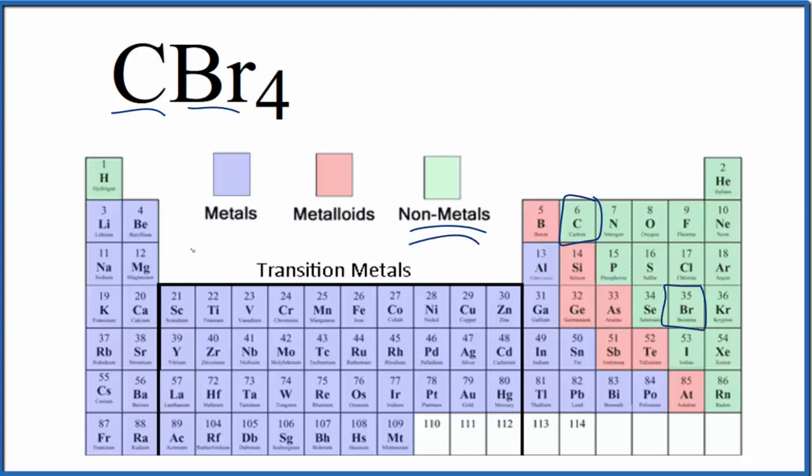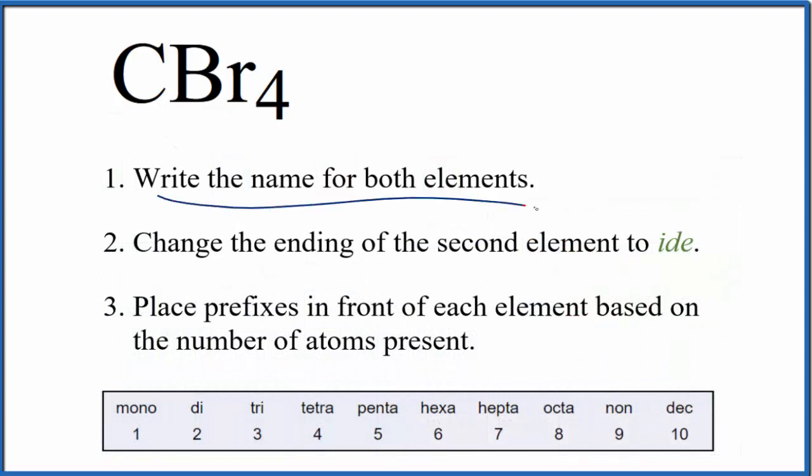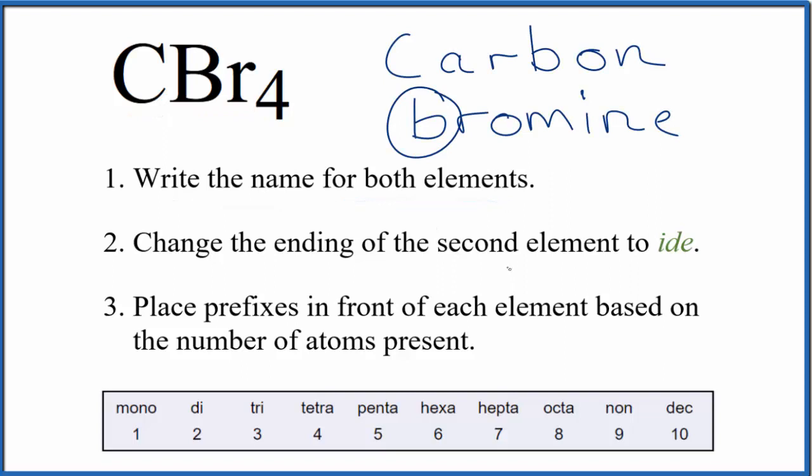So two nonmetals - this is a molecular or covalent compound. We use these rules to write the name for CBr4. First, we'll write the name for both elements. That's carbon and bromine. Note that this B is lowercase.